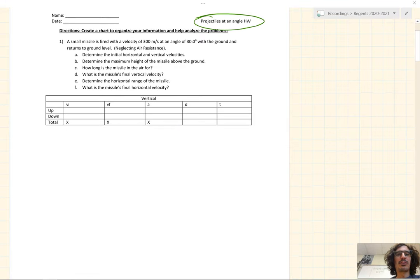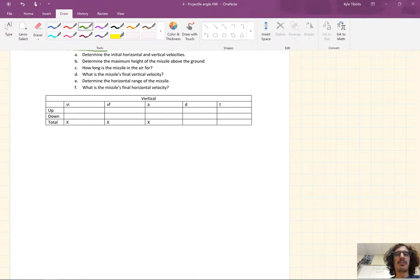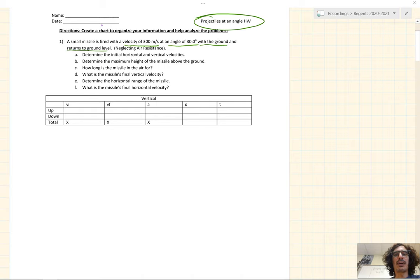Question 1. A small missile is fired with a velocity of 300 meters per second at an angle of 30 degrees with the ground and returns to ground level. We're going to neglect air resistance. For all these problems, we're going to neglect air resistance. No matter what the question asks, the first thing we want to do automatically is determine the initial horizontal and vertical velocities.